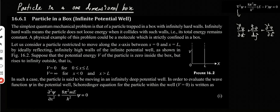A physical example of this problem could be a molecule which is strictly confined in a box. Let us consider a particle restricted to move along the x-axis between x equal to 0 and x equal to L. The potential energy V of the particle is 0 inside the box but rises to infinity outside. So that's our boundary condition.